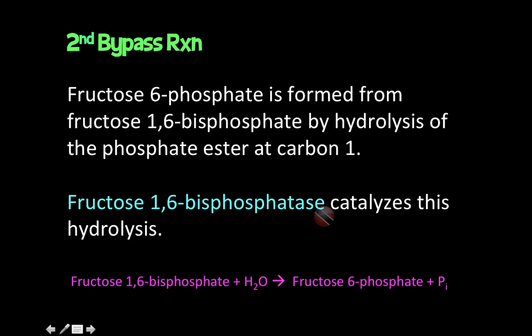If we were to simply reverse the PFK1 reaction, remember that in glycolysis the PFK1 reaction consumed one molecule of ATP when converting fructose 6-phosphate to fructose 1,6-bisphosphate. So a simple reversal would mean we would make one ATP molecule. However, the cell doesn't want to do that — it tends to be energetically unfavorable to go through that route.